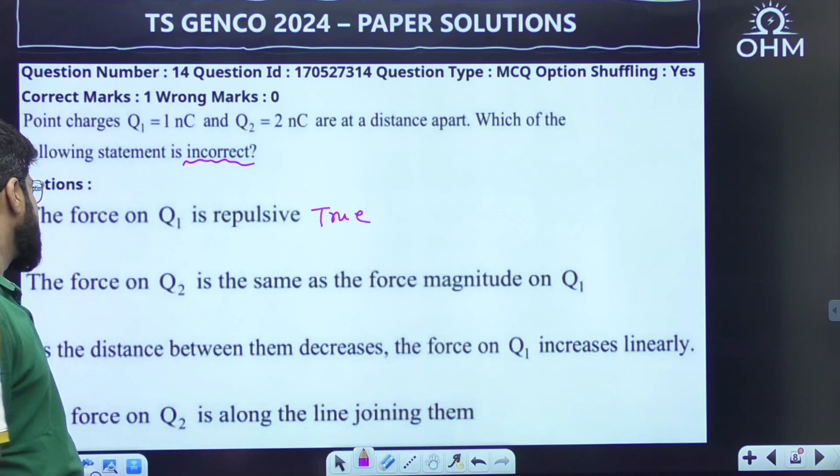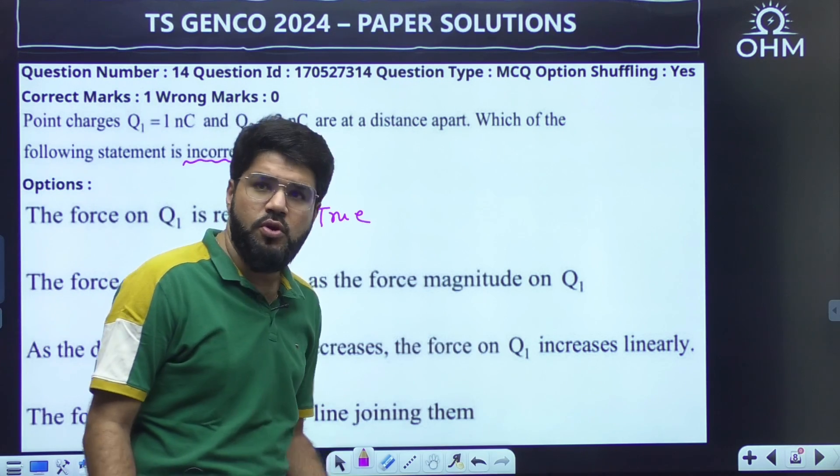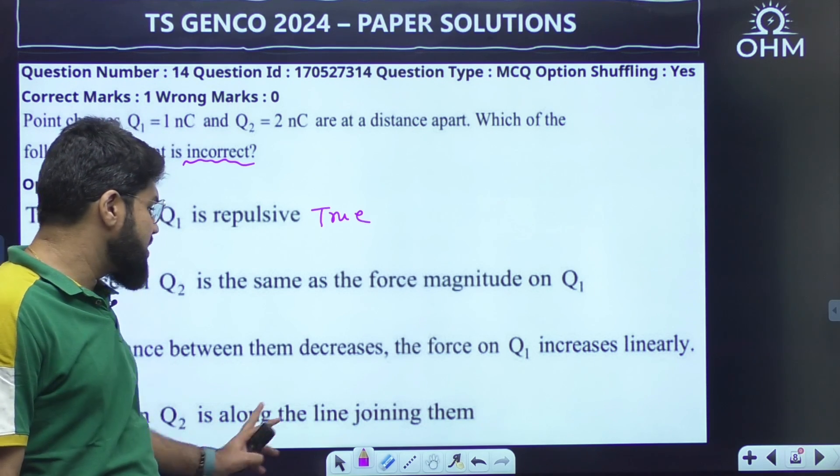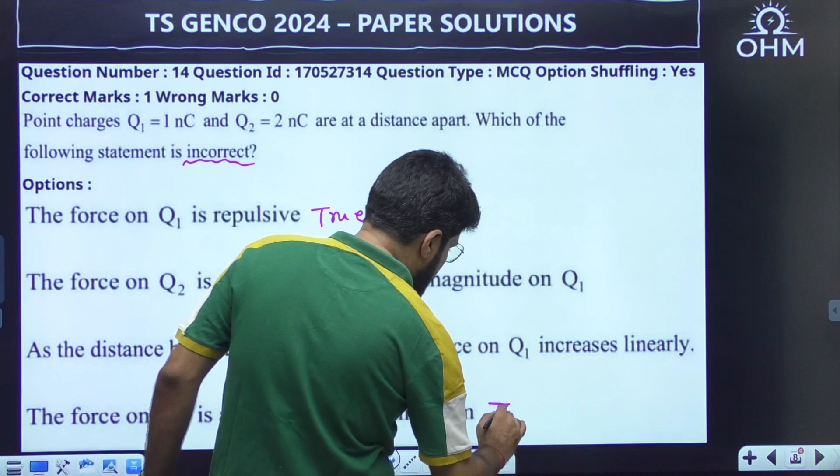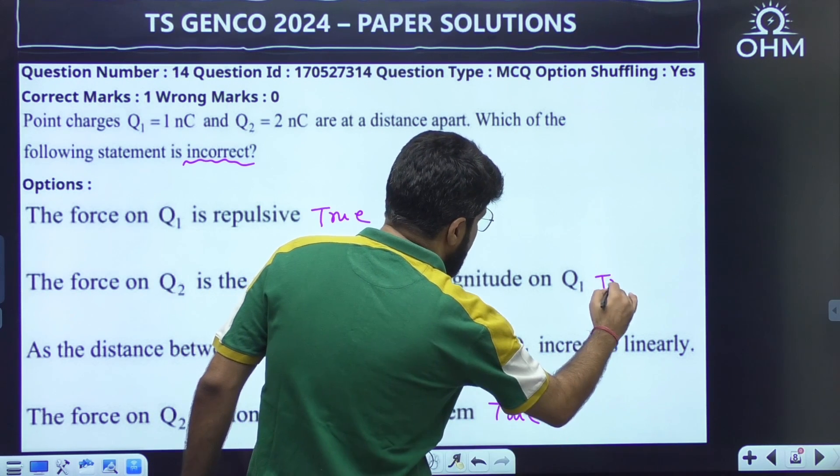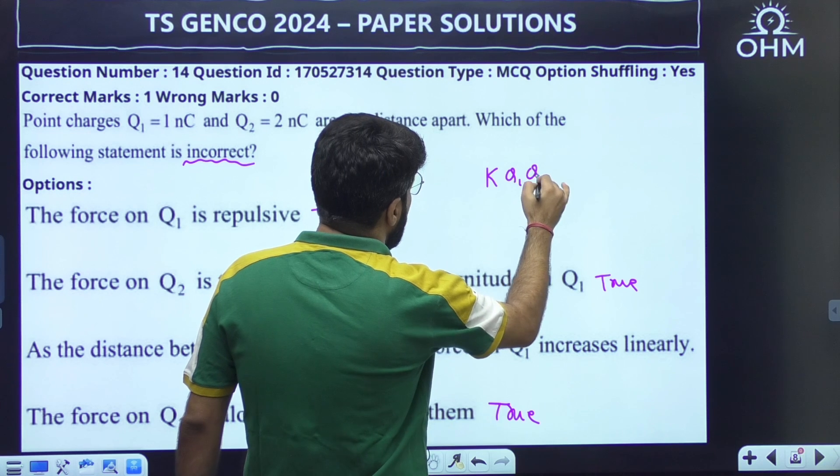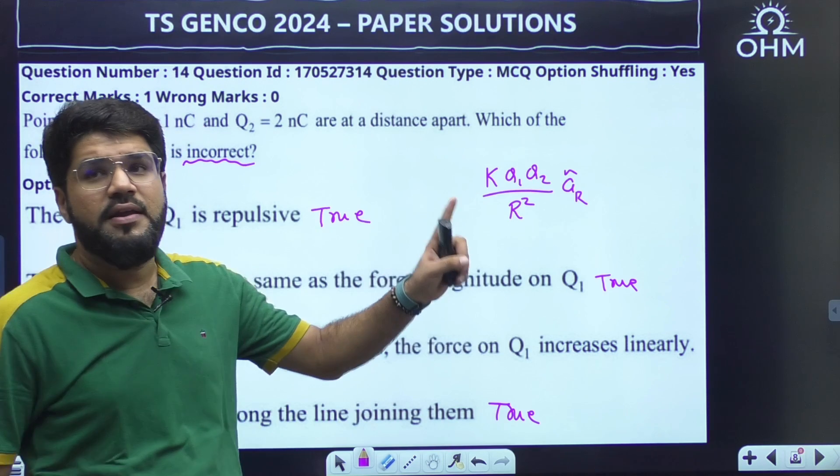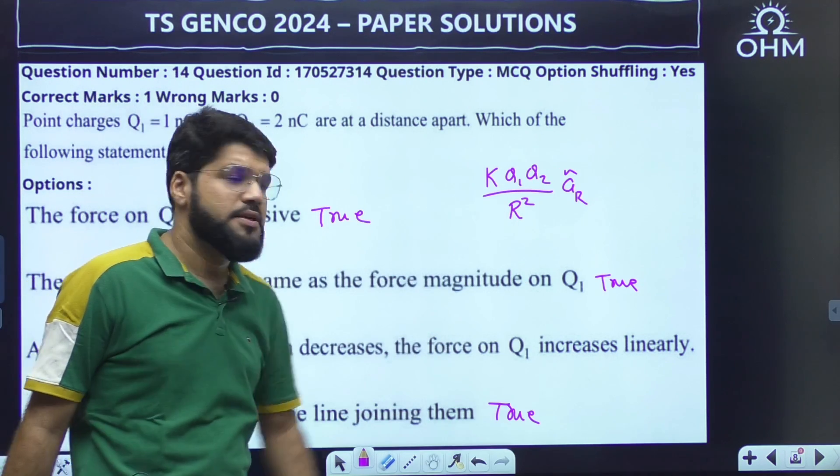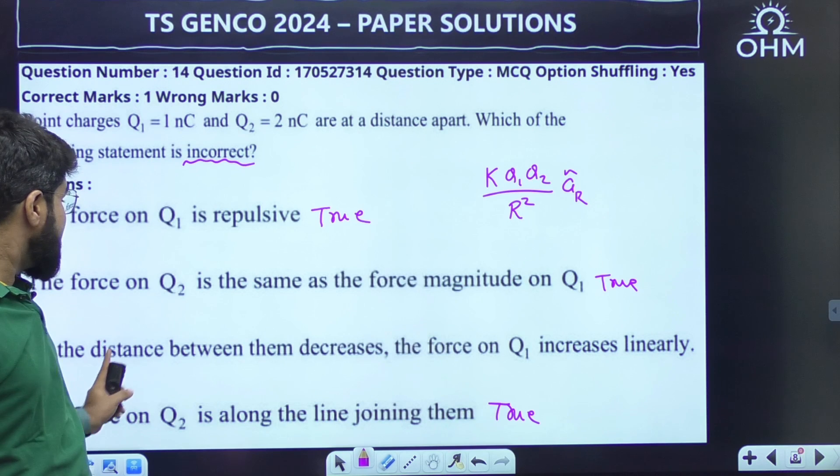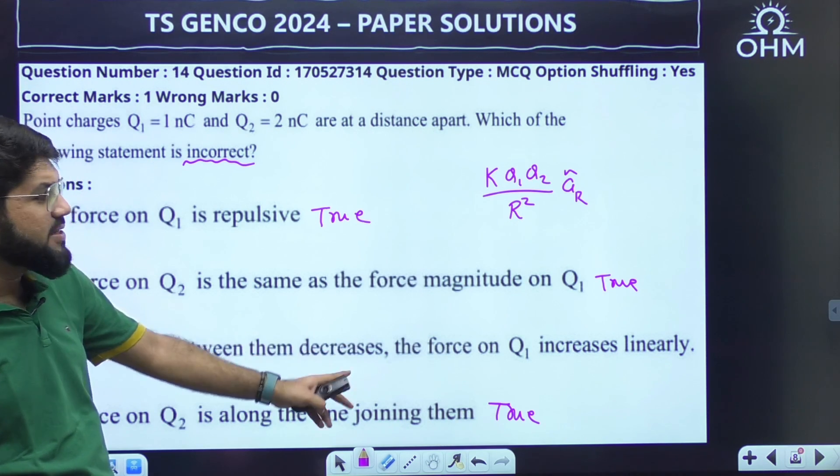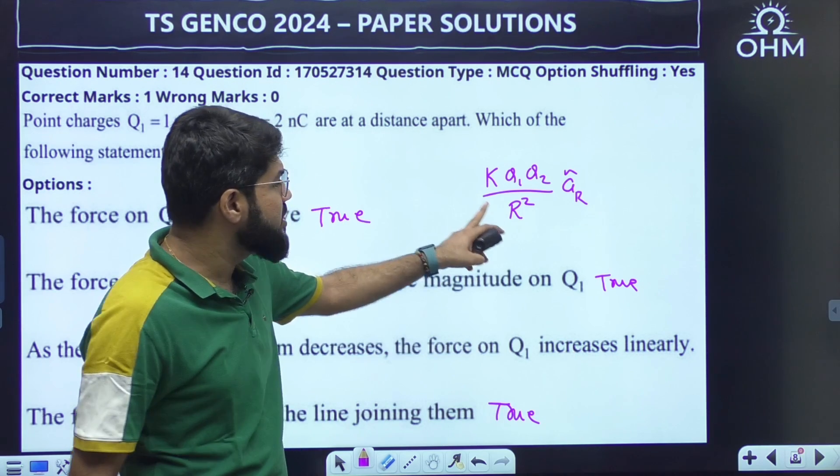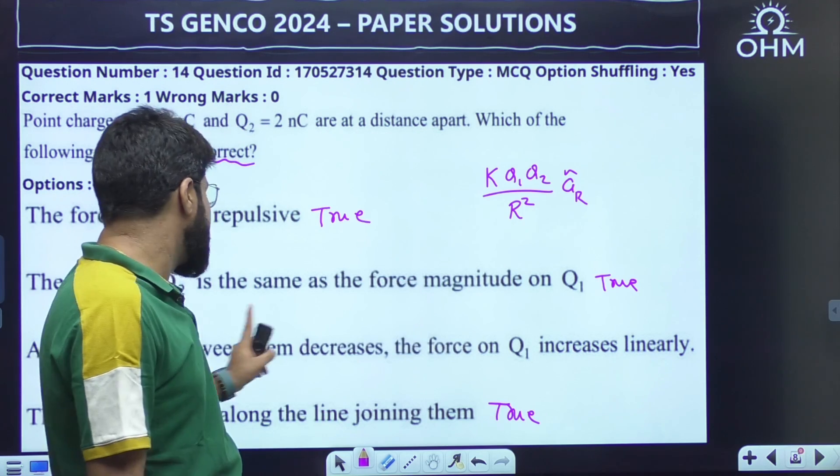The force on Q2 is same as the force magnitude on Q1. The magnitude of force on both of them is the same. And the force on any of the charges along the line joining there, so D option is also true. Normally you write this way: KQ1Q2 divided by R square unit vector AR, where AR is the unit vector along the line joining the two points. Now as the distance between them decreases, the force increases. This part is correct because force is inversely proportional to the distance.